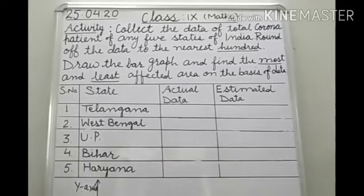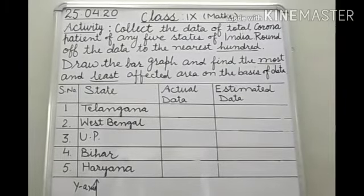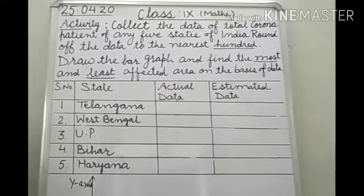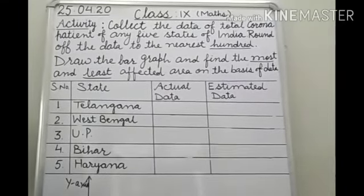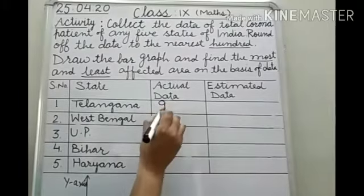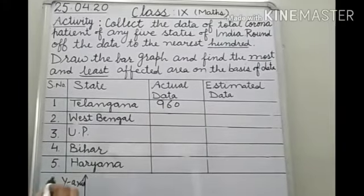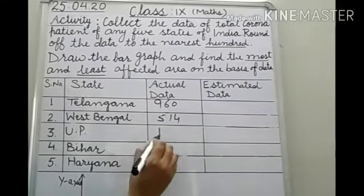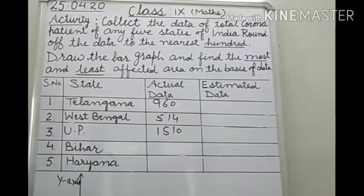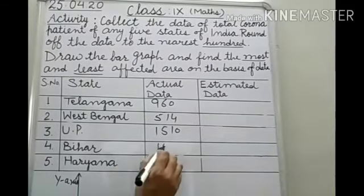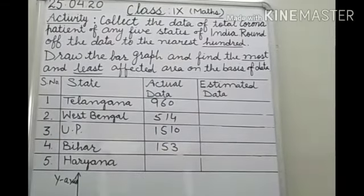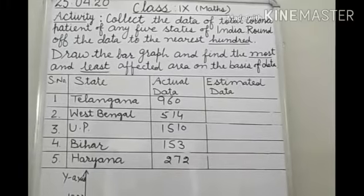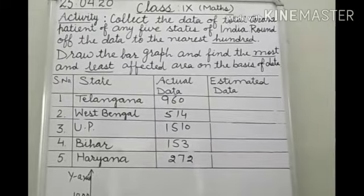Now you have to take the data of these states from either from TV or internet or whatsoever it is. Yes, I have taken the data from the internet and I am going to write it. Telangana, the number of patients of COVID-19 are 960. West Bengal, they are 514. Uttar Pradesh, they are 1510. Then Bihar, they are 153. And in Haryana, they are 272. This is the situation of, or you can say, counting of COVID-19 patient.